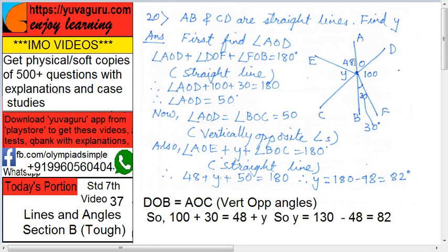This y plus 48 plus this angle 50, this is again 180. So 48 plus y plus 50 equals 180. So y becomes what? 180 minus this becomes 98. 180 minus 98, that is 82. Either of these two methods can be used.